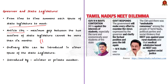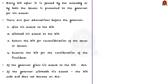An ordinary bill can be introduced in either house of the state legislature — that is, it can originate from the State Legislative Assembly or the State Legislative Council. An ordinary bill is a bill concerned with any matter other than financial subjects. It can be introduced either by a minister or a private member. Every bill, after being passed by the assembly or both houses in case of a bicameral legislature, is presented to the Governor for assent.